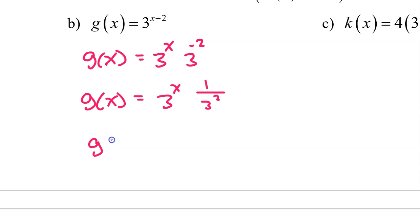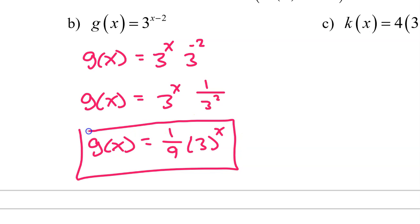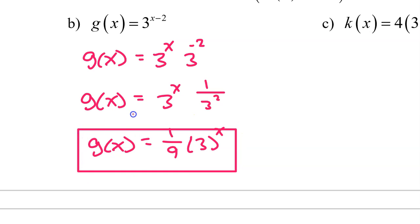I will put 1 over 9 in the front, so g of x equals 1 ninth times 3 to the x. We have now gone from a horizontal translation by positive 2 to a vertical dilation by a factor of 1 ninth.